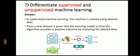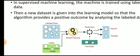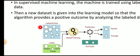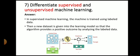Next question: differentiate between supervised and unsupervised machine learning. This is a very common question. The answer is, in supervised machine learning, the machine is trained using labeled data. Then a new data set is given into the learning model, so that the algorithm provides a positive outcome by analyzing the labeled data. Here you can see, this is your algorithm, and now it is provided with the labeled data. We are providing hexagon, square, triangle, and the model will learn through it, and then it can differentiate the various shapes. Basically, in case of supervised learning, we are providing the system the labeled data.